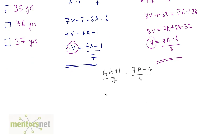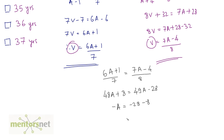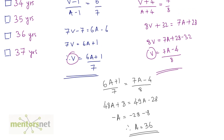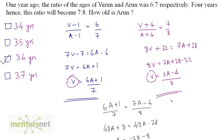Solving: 8 times (6A plus 1) equals 7 times (7A minus 4), giving 48A plus 8 equals 49A minus 28. So, 48A minus 49A equals minus 28 minus 8, which gives minus A equals minus 36. Therefore, A equals 36. Arun's age is 36 years, and the answer is option C.